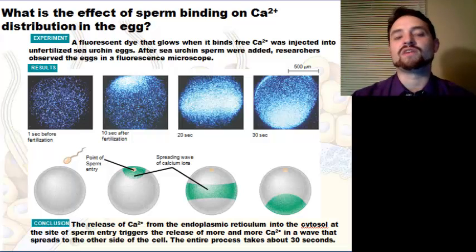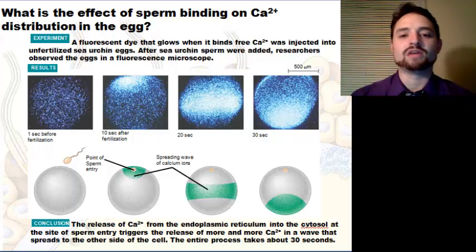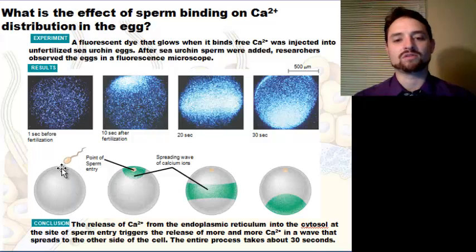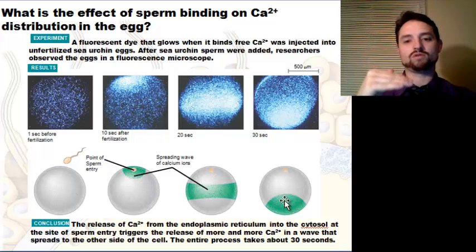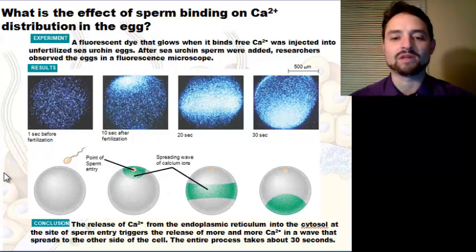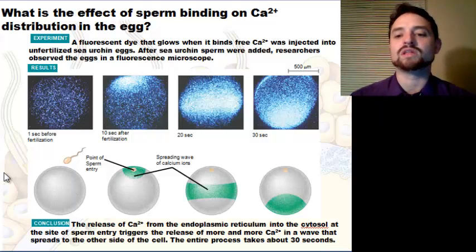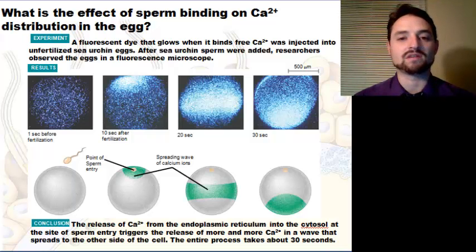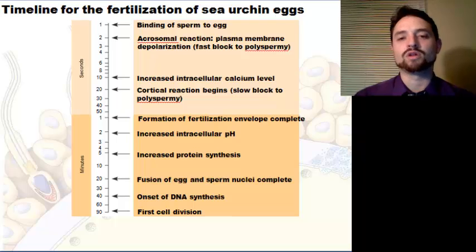We can see the effects of calcium in an experiment done with a fluorescent dye that glows when it binds free calcium. You can see where the sperm and egg unite and the influx of calcium moving across the egg cell. The release of calcium from the endoplasmic reticulum into the cytoplasm at the site of sperm entry triggers a release of more and more calcium in a wave that spreads to the other side of the cell. This entire process takes about 30 seconds in sea urchins.